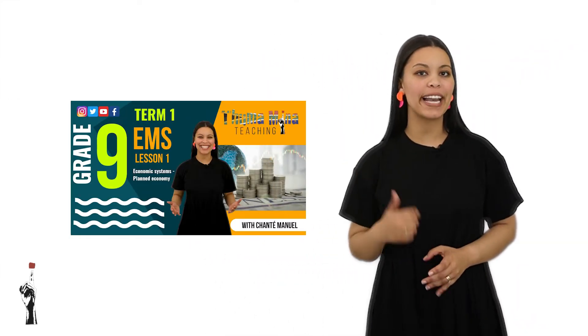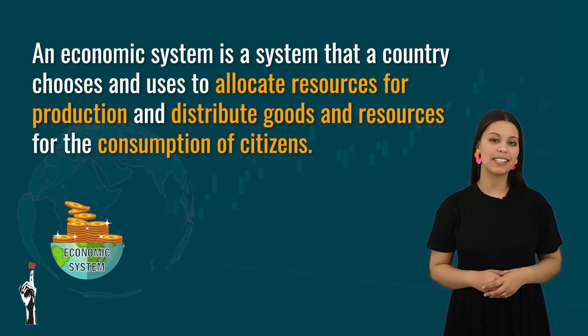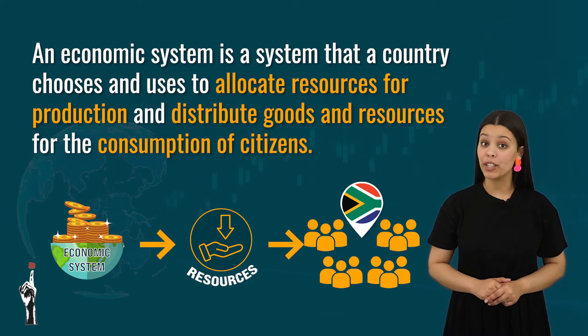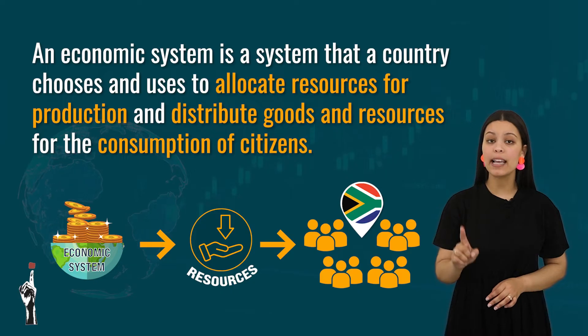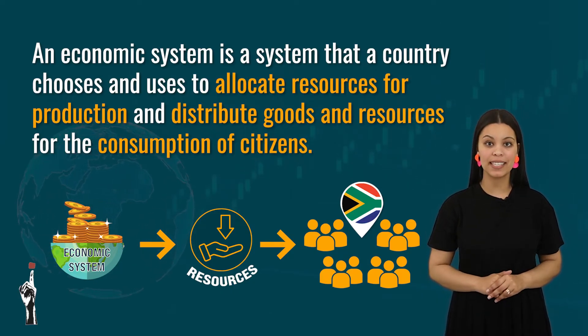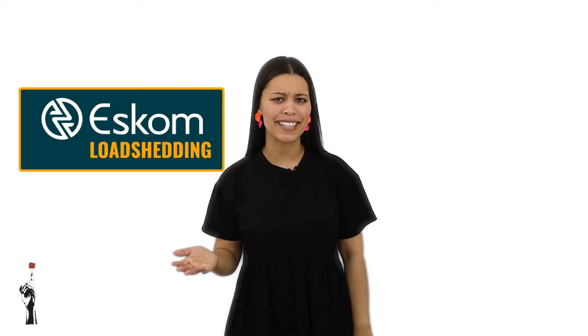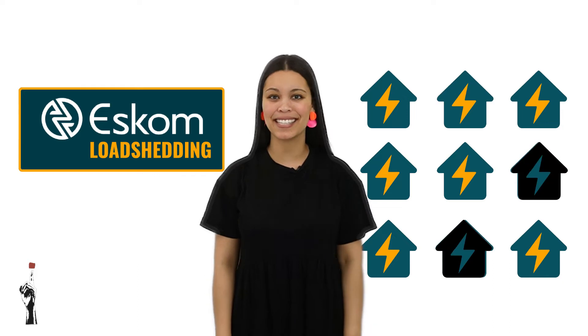I'm sure you got those definitions correct, but if you aren't sure, just go back to lesson one where we discussed it in depth. Let's quickly revise: an economic system is where a country decides how to distribute its resources and products to all the citizens in the country. We know it's not easy, as there are limited resources for all the needs and wants of citizens. Oh yes — it's load shedding! This is a typical example of limited resources needed to supply all the needs of citizens in a country.